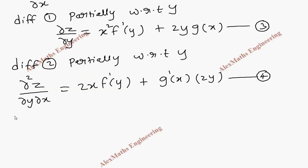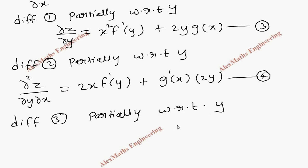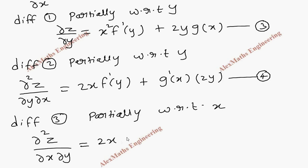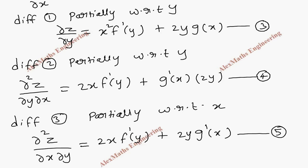In the same way, let's take the third expression and differentiate it partially with respect to x. dou square z by dou x dou y: since it is a partial derivative with respect to x, y is constant, so x square derivative is 2x and f dash of y is written as it is. Similarly 2y is constant and g of x derivative is g dash of x. This fourth and fifth expression are actually the same, so it is enough to work only up to the fourth expression.